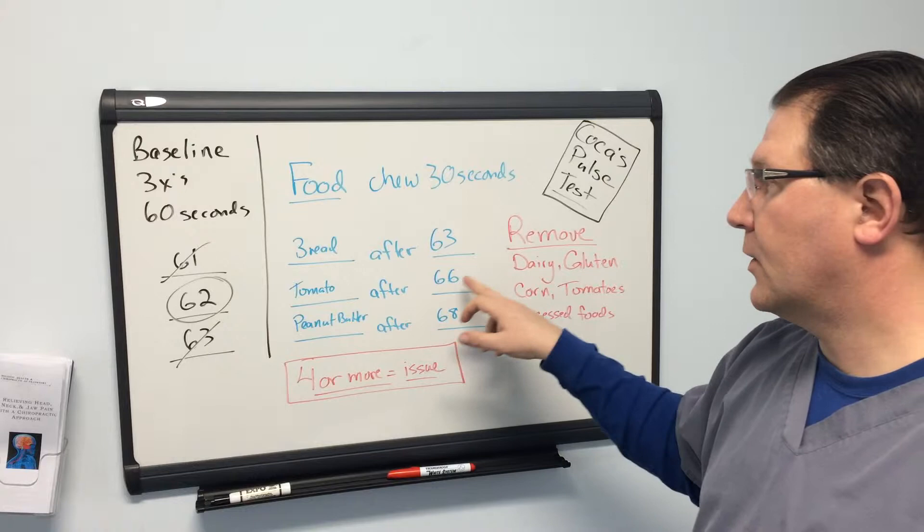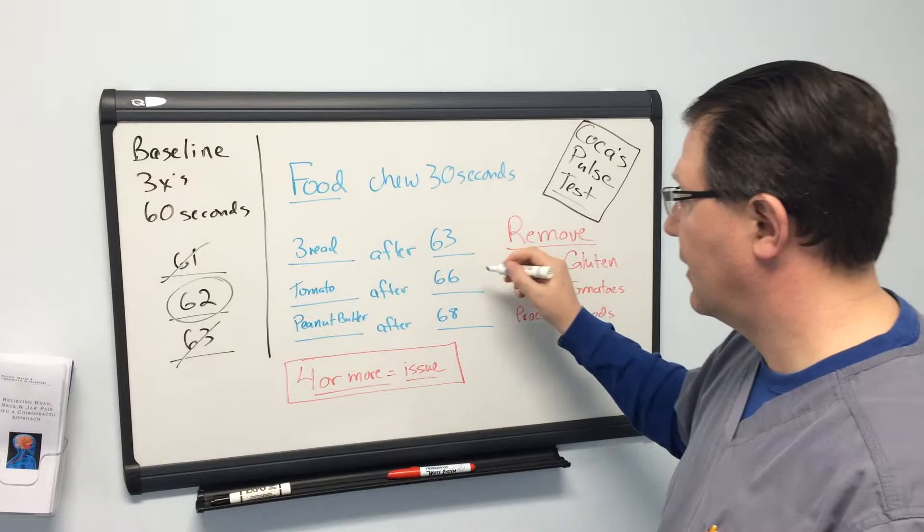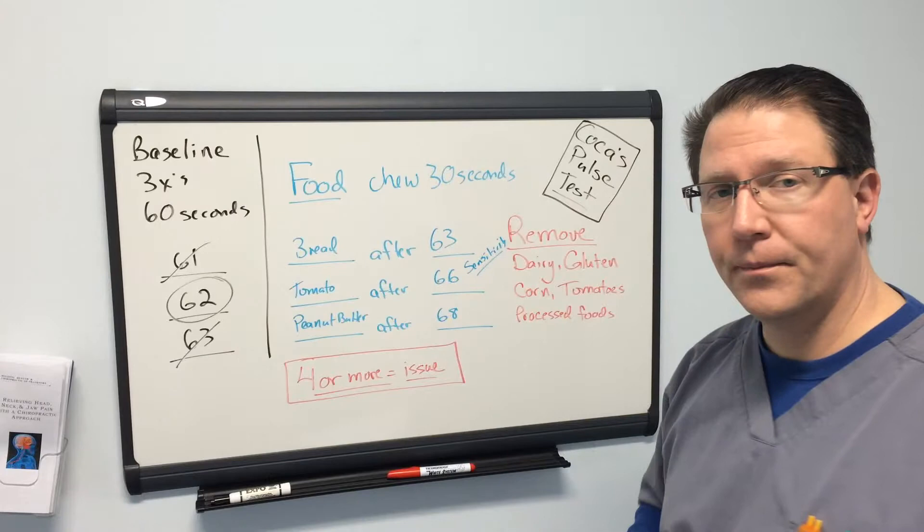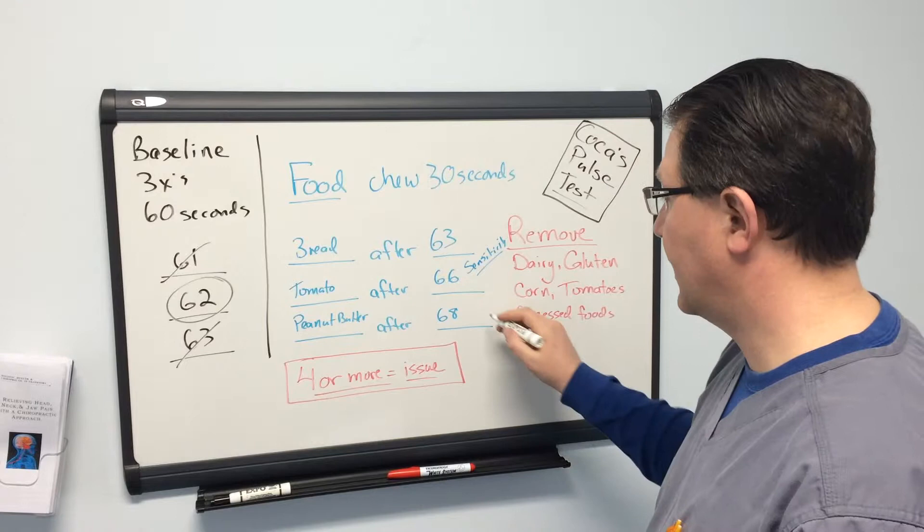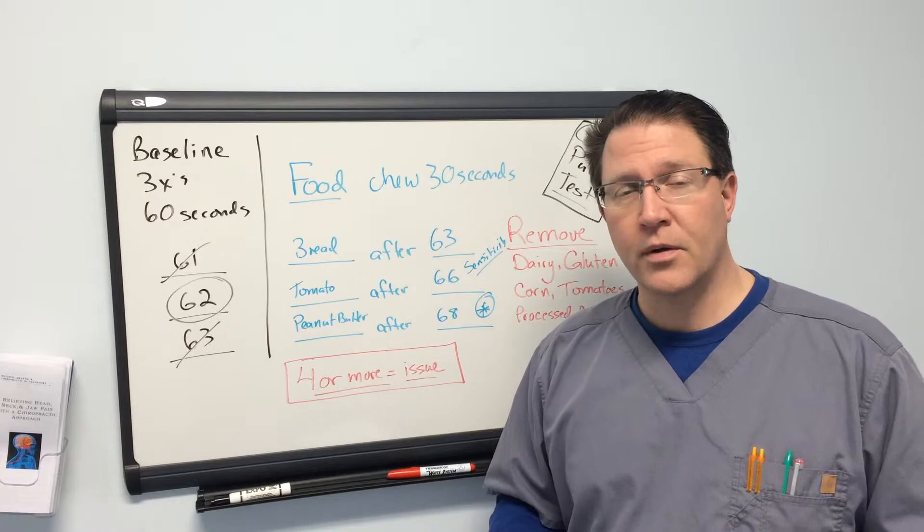So bread at 63, well we're only one different. Tomato at 66, well we're right on that edge there. Four, we may have a sensitivity or an allergy to that food. Peanut butter brought us in at 68. That's a six point difference. There's definitely an issue going on here.